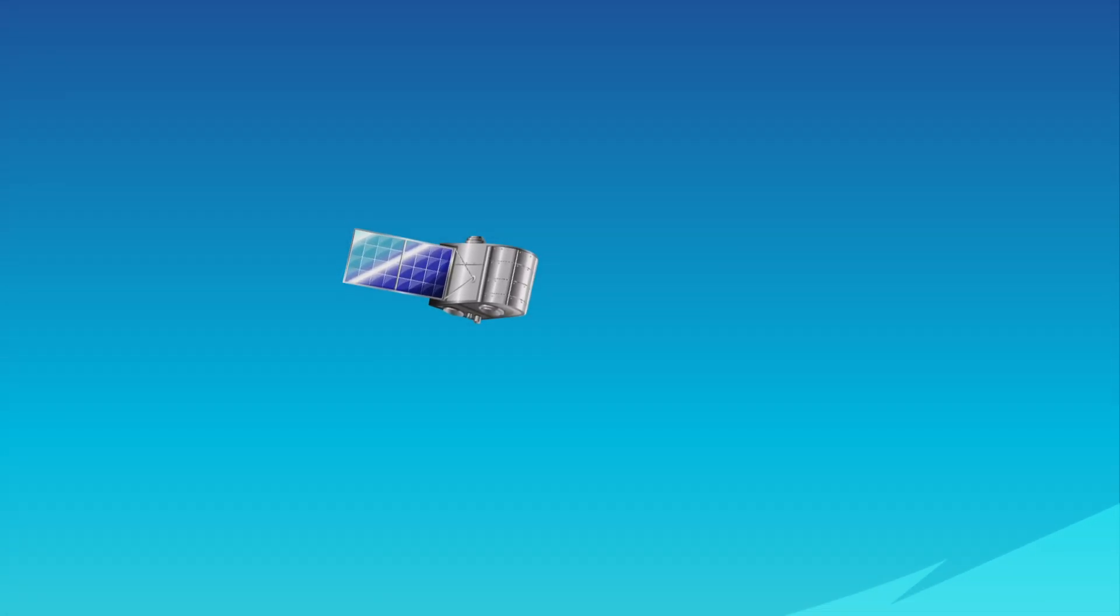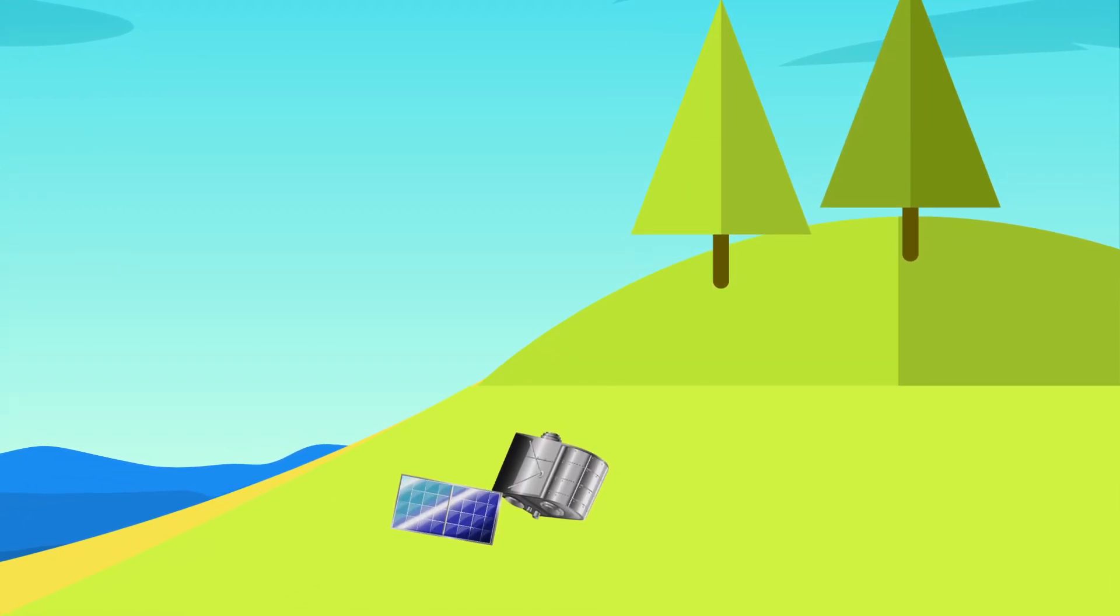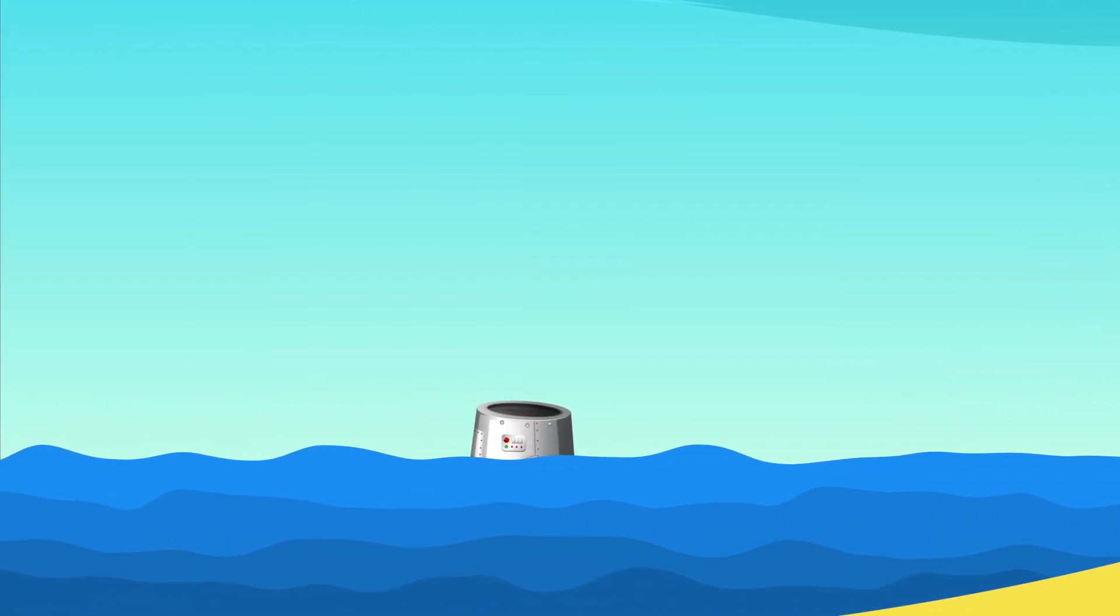In fact, it has and still does. An average of one piece of debris has fallen back to Earth each day for the past 60 years. Much of it falls in the ocean, but there have been reports of numerous smaller debris found on land.